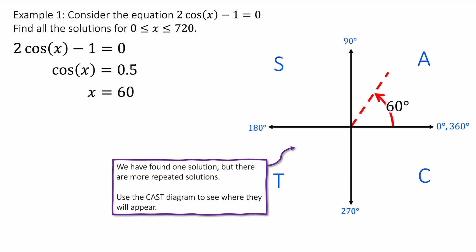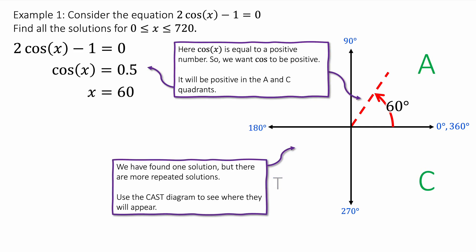So there is one solution in the first quadrant between 0 and 90, which is 60 degrees. Which we kind of knew because the cos(x) graph is positive between 0 and 90, and 0.5 is a positive number. But there is a repeated solution. And the other quadrant which has cos being positive, because remember 0.5 is a positive number, so cos(x) is equal to a positive number. Cos(x) is positive again in the cos quadrant as well. So there will be another solution down in the bottom right quadrant.